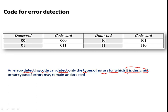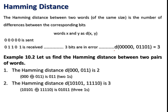In this error detecting code methodology, the receiver can detect only the types of errors for which it is designed — based on the valid code words it knows. There is a limitation in finding all errors, and this is based on the concept of minimum distance, known as Hamming distance. Hamming distance finds the difference between two equal-size bit sequences by comparing corresponding bits.